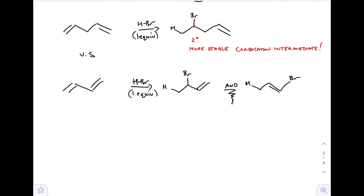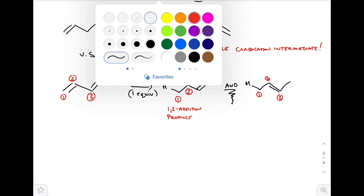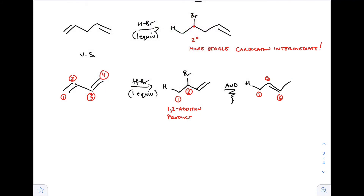But here's the tricky part - we also form a compound where we have a shift in the pi bonds. With the 1,2,3,4 labeling: the HBr was added to the 1 and 2 position - that's why it's called the 1,2-addition product. On the right, the bromine and hydrogen were added to the 1 and 4 positions - counting from left to right, not necessarily following nomenclature rules. That's the 1,4-addition product.